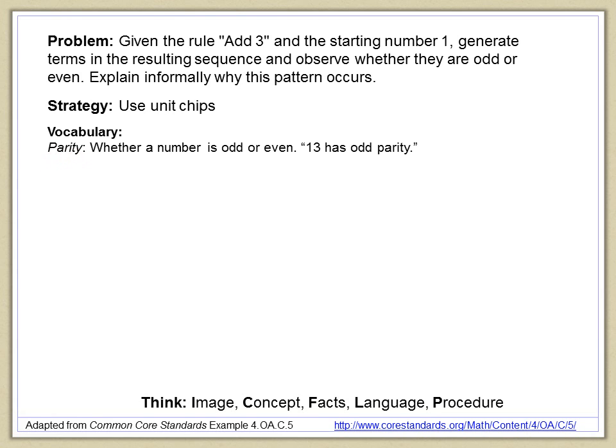The word parity indicates whether a number is odd or even. It comes from the Latin, same Latin root as the word pair or two of a kind. And so when we say 13 has odd parity, it's because it can't be grouped into pairs. Sixteen has even parity. So whether a number is odd or even is indicated by its parity.